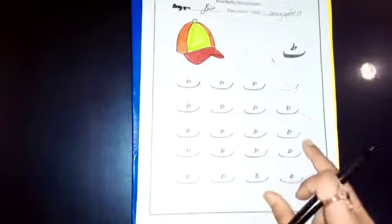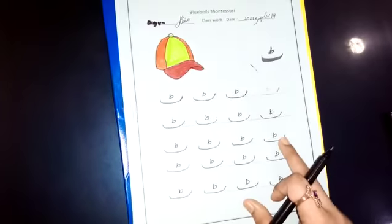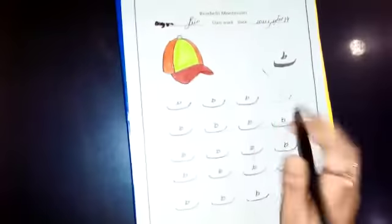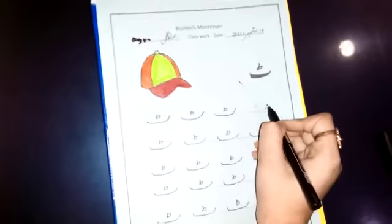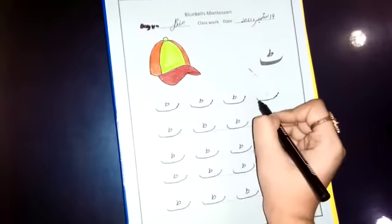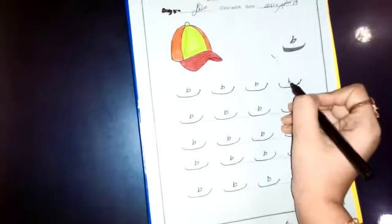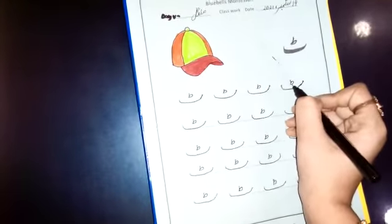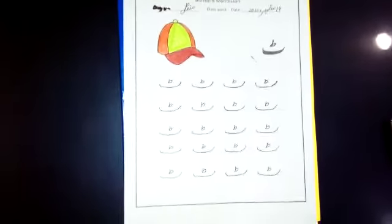And in the classwork you have to trace te. In one line you have to trace te. How do we write te students? Look at this. Just like we write beh, little curve, sleeping line and then curve. Little standing, little curve and circle. Yes, like this. Look, te.